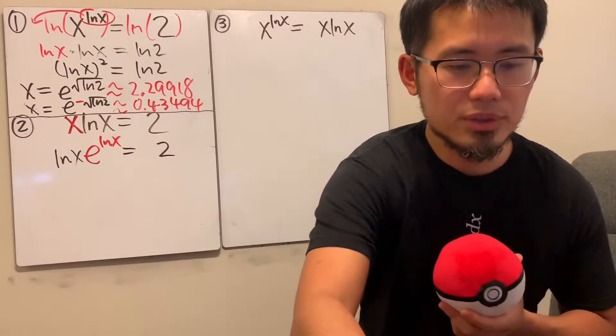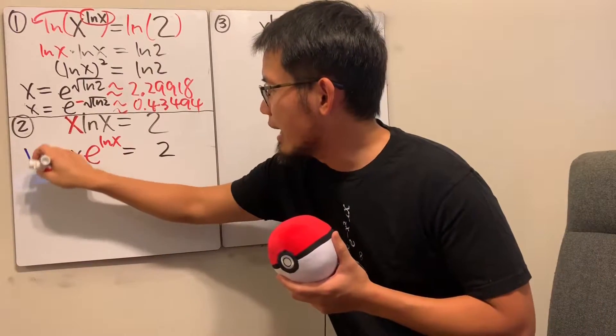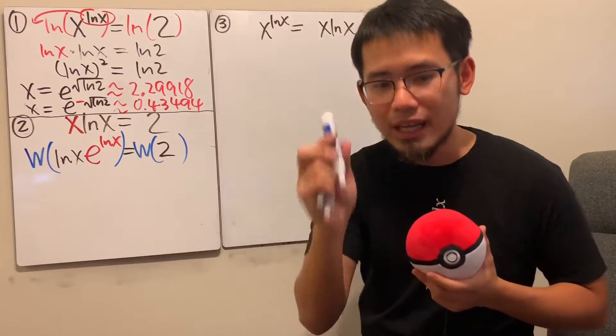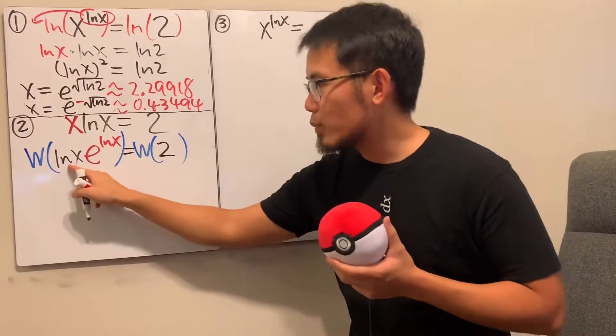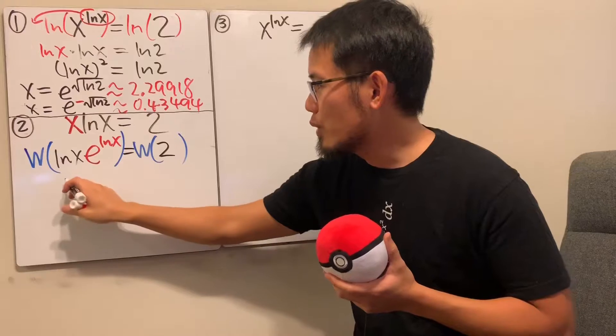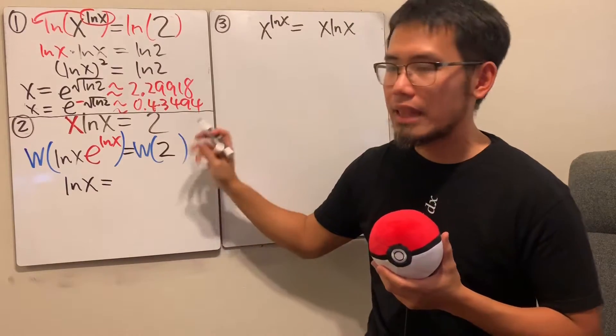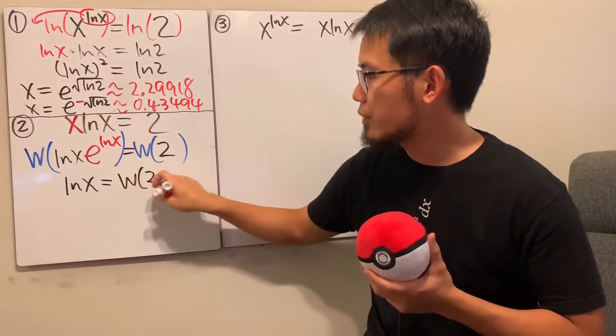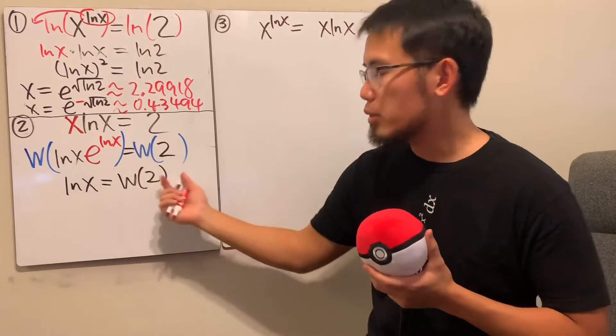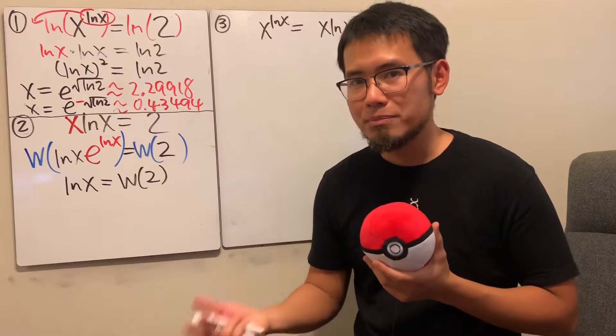And then I'm just going to use the blue marker right here. I'm just going to take the Lambert W function on both sides. And when we do that, we'll just end up with whatever this is. We'll end up with just natural log of x, and this is equal to W of 2, like this. And you might be wondering, what's the value for W of 2? Well, you will have to use Wolfram Alpha or Mathematica.